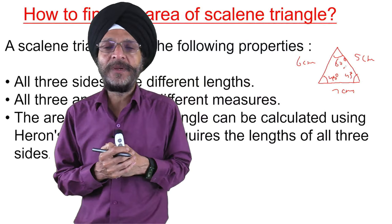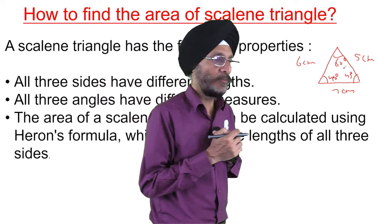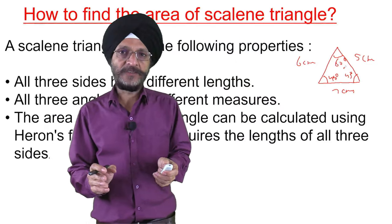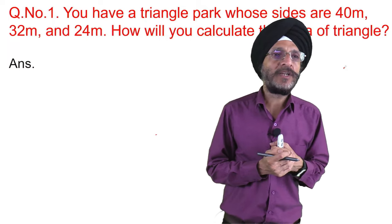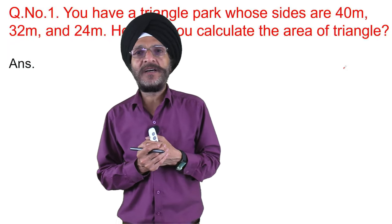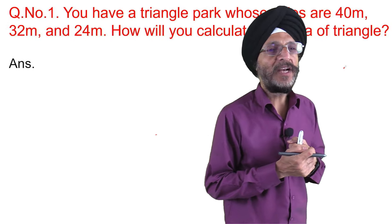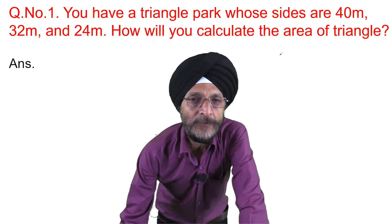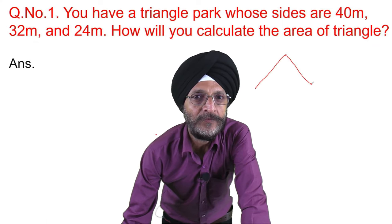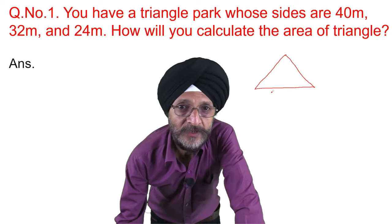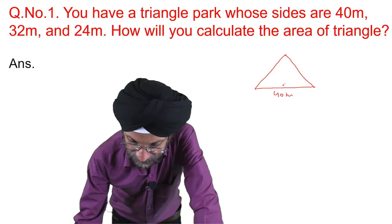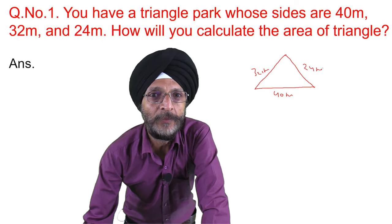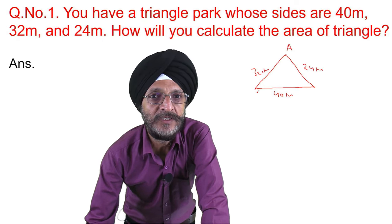The area of such a triangle can be calculated using Heron's formula, but the condition is that we should know the lengths of all three sides. The question before us is: you have a triangle path whose sides are 40 meters, 32 meters, and 24 meters. How will you calculate the area of the triangle? We will make a triangle: this side is 40 meters, this is 32 meters, and this is 24 meters.